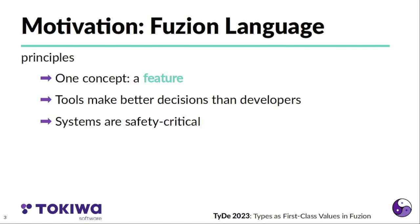The motivation of the Fuzion language is to have a very simple language, basically bring different aspects, different concepts down to one concept which we call a feature. Instead of having the developer make decisions how something is implemented, we want to have tools make these decisions. And a third point, we see that more and more systems are safety critical, so we want to have a high-level language that is usable in the safety critical domain.